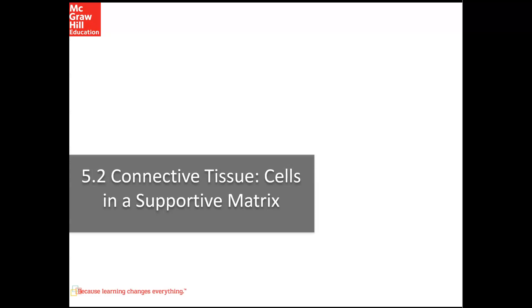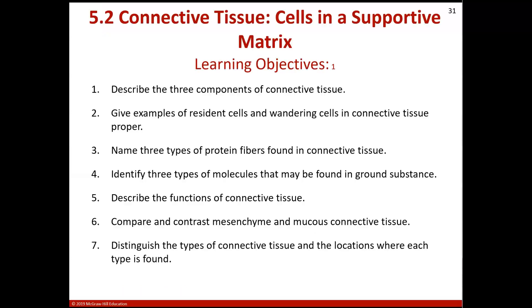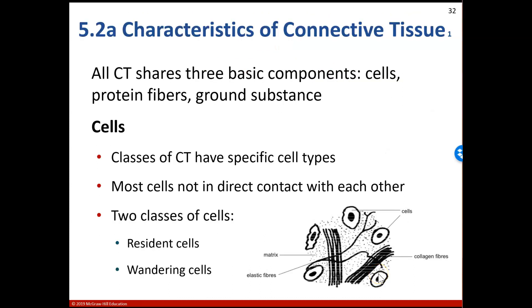Hello again and welcome to your chapter 5 lecture series where we're going to talk about section 5.2 on connective tissue, our cells in a supportive matrix. And here are the learning objectives we hope to achieve through this lecture. So first we need to discuss the characteristics of connective tissue. All connective tissue are going to share three basic components: cells, protein fibers, and ground substance.